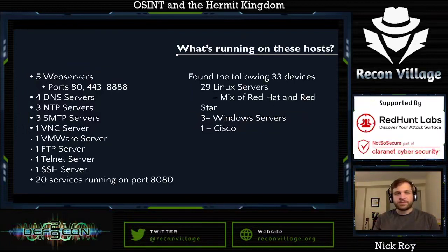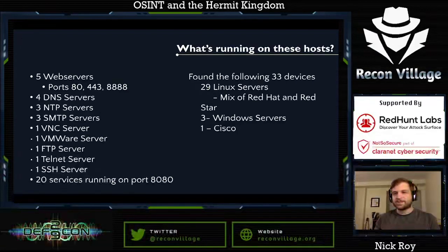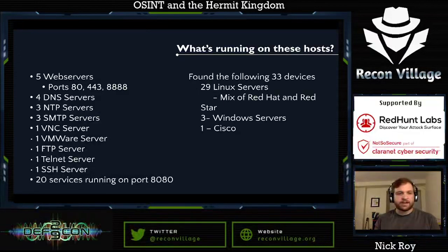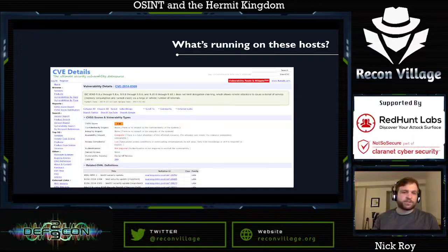To recap what we found running on all these hosts: there are web servers, standard DNS, NTP, and SMTP servers, a VMware server, an FTP server, a mix of Red Hat and Red Star devices, a couple of Windows servers, our one Cisco device, and 20 services running on port 8080 that I actually have no idea what they are. Within the last couple of weeks most of those seem to have gone away — they were open for a couple of years but are no longer in use. Looking through the manuals, they talk about Tomcat a lot and using port 8080 for management, so my new guess is it's something to do with that. But really, why identify this? Even banner information that may not be the most reliable still gives us a good starting point for understanding what's in this environment.